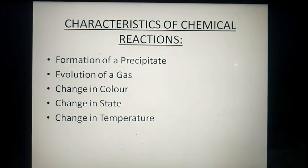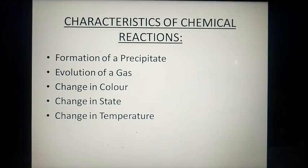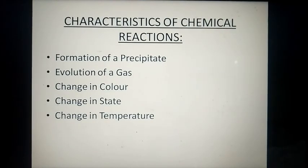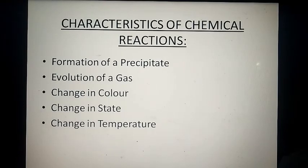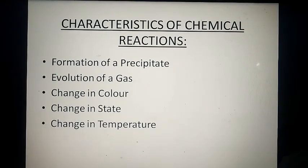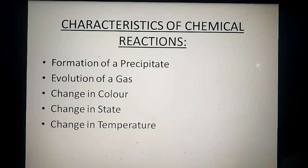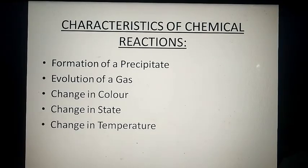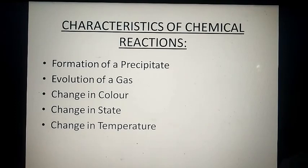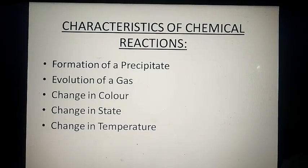Next is evolution of a gas. Some chemical reactions that occur are accompanied by evolution of gas. In our example, when zinc and dilute sulfuric acid or hydrochloric acid are added, a chemical reaction occurs and hydrogen gas evolves. The third point is change in color. Some chemical reactions occur where we observe a color change. For example, iron's color is grayish black, but rust's color is reddish brown. So basically what happens is that when the rusting process occurs, iron's color changes from grayish black to reddish brown.